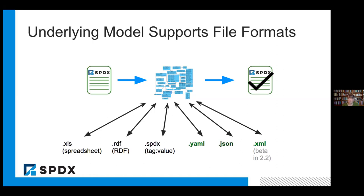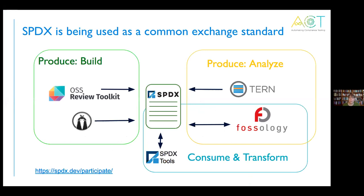One of the things that OMG obviously cares about is making sure that anything we evolve to has an underlying model that can be validated. SPDX today is being used already with various tools as an interchange format. Quartermaster and OSS Review Toolkit can both generate SPDX as part of their builds as they're building systems and monitoring things. OSS Review Toolkit can also generate CycloneDX.